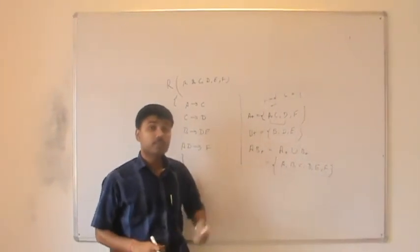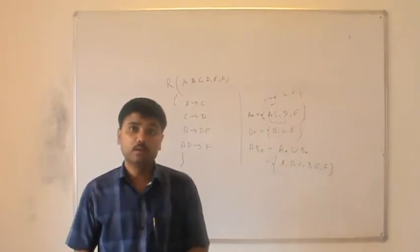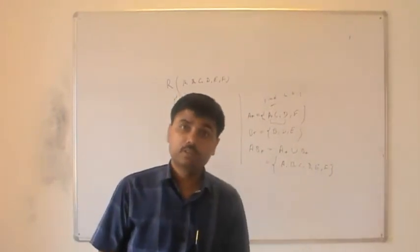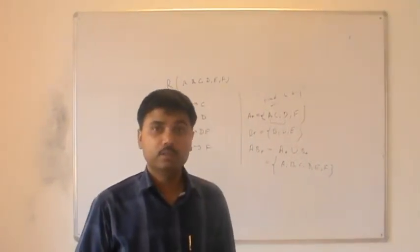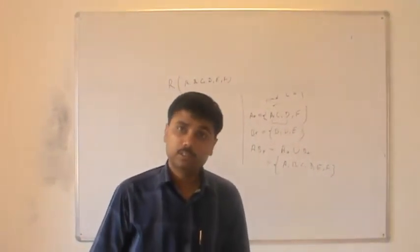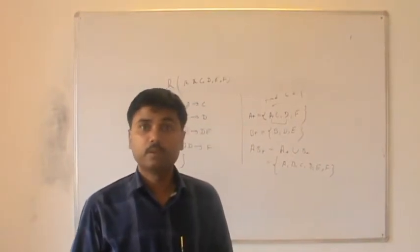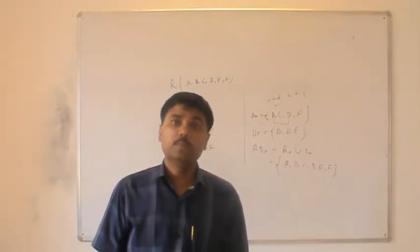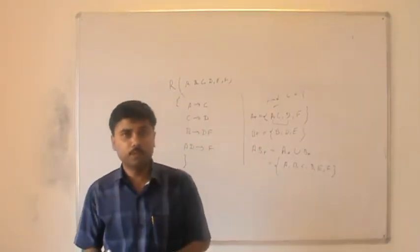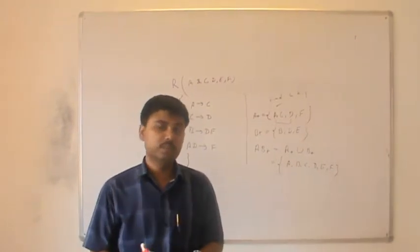So AB is a super key. But it must also satisfy the minimality condition to be a candidate key. We must check whether AB is truly minimal — that is, no proper subset of AB is also a super key.